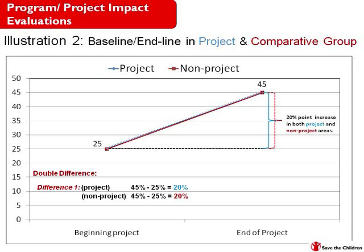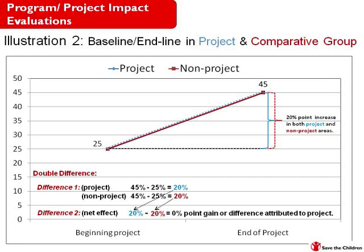Calculating the first difference: the project changed from 25 to 45 percentage points — a 20 percentage point gain. Similarly, the non-project area also had a 20 percentage point gain. For the second difference, we take the 20 percentage point increase in our project area and subtract the 20 percentage point increase in non-project areas. The result is that the pure effect of our interventions on increasing immunization is zero, since non-project areas had the same rate of increase.